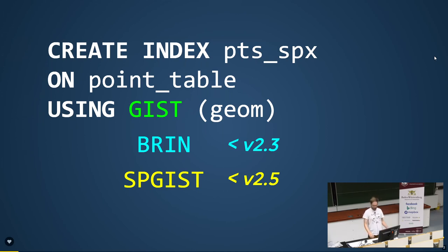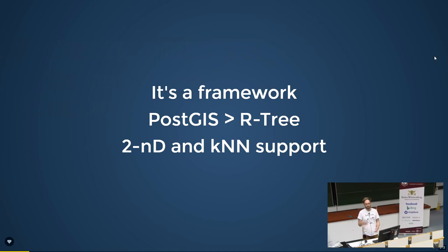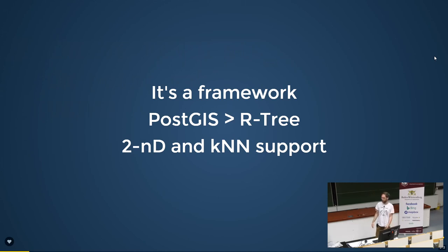To bring us all on the same level, I'll first explain how every index is structured. Let's start with GiST. When I talk about GiST, I refer to the GiST implementation of PostGIS, because GiST is actually a framework — you can create different types of indexes on top of it. It's mostly designed for multidimensional data, something you cannot really sort by its nature, like ranges or spatial data. The PostGIS developers implemented an R-tree on top of this GiST framework.